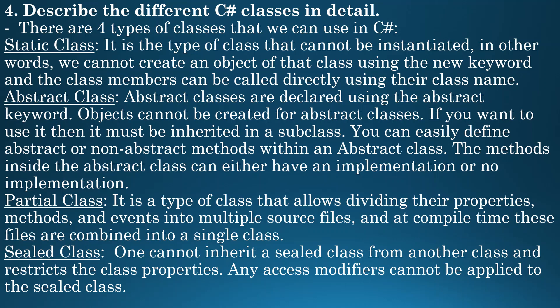The next class is abstract class. Abstract classes are declared using the abstract keyword. Objects cannot be created for abstract classes — if you want to use it, it must be inherited in a subclass. You can easily define abstract or non-abstract methods within an abstract class. The methods inside the abstract class can either have an implementation or no implementation.